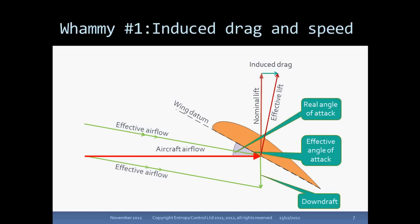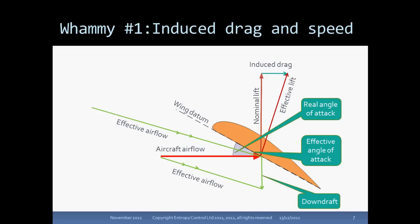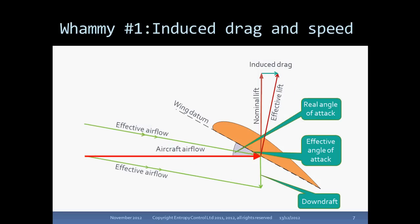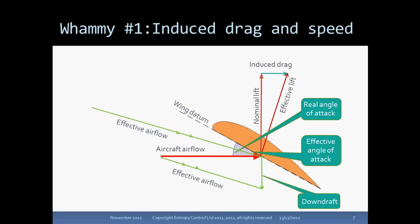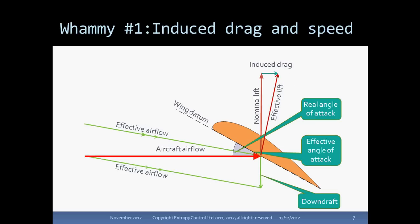Now let's double the airspeed. Even if the downdraft remains the same — which it doesn't of course, we'll come back to that — the effect of the increase in airspeed is to rotate the effective airflow down towards the horizontal. That rotates the lift vector forward, reducing the size of the induced drag force. So that is whammy number one. Increasing that airflow vector just rotates everything to a more horizontal airflow and the induced drag drops.